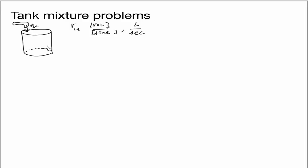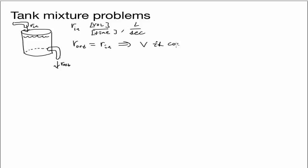We're also going to have a spigot coming out of the tank, giving us an R_out. For now we're going to take R_out to be equal to R_in, and we're also going to have this tank filled with some volume of water. This implies that the volume is constant, because whatever is going in, the same amount is going out, so the volume of liquid inside the tank will always stay the same.